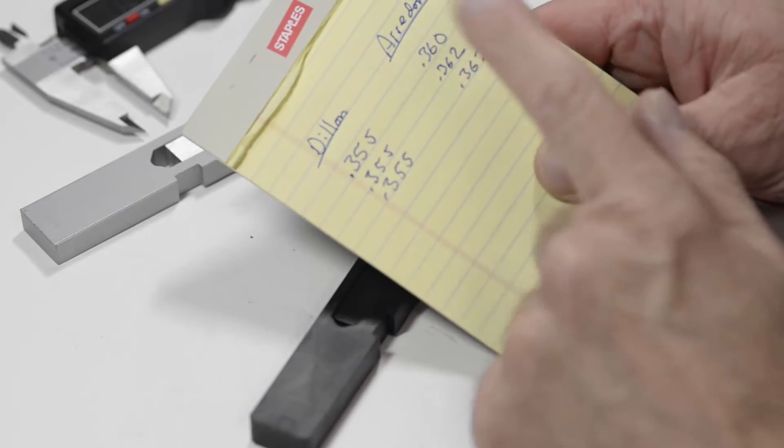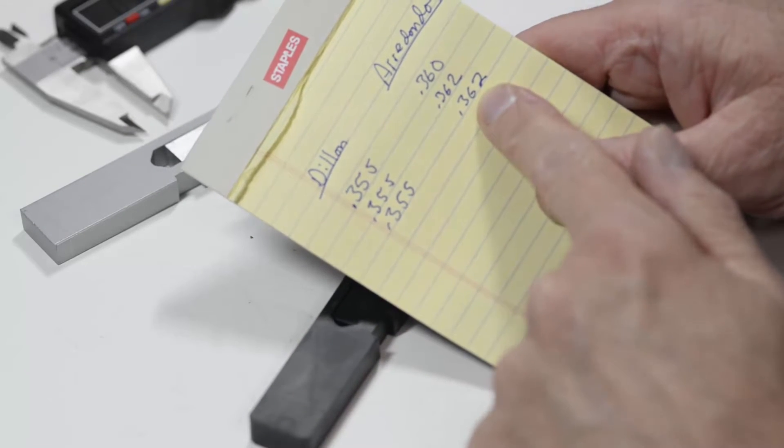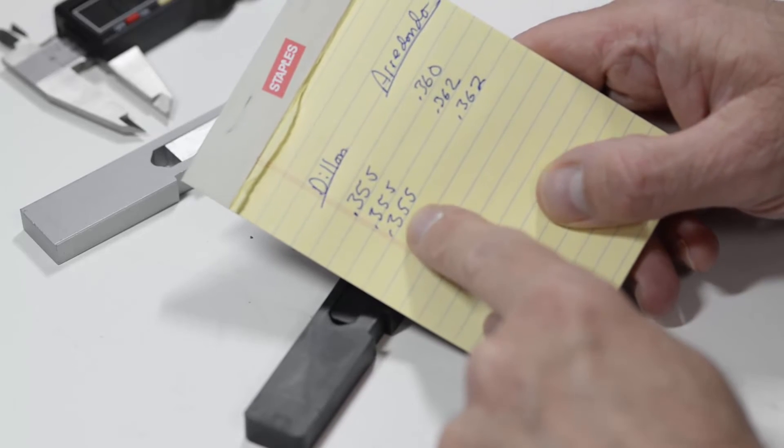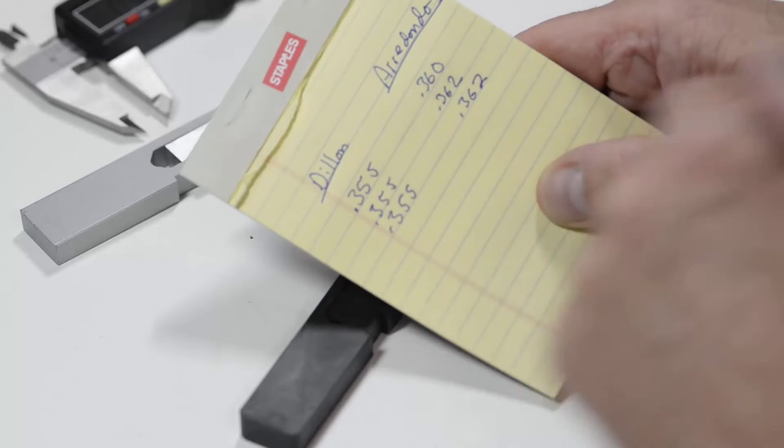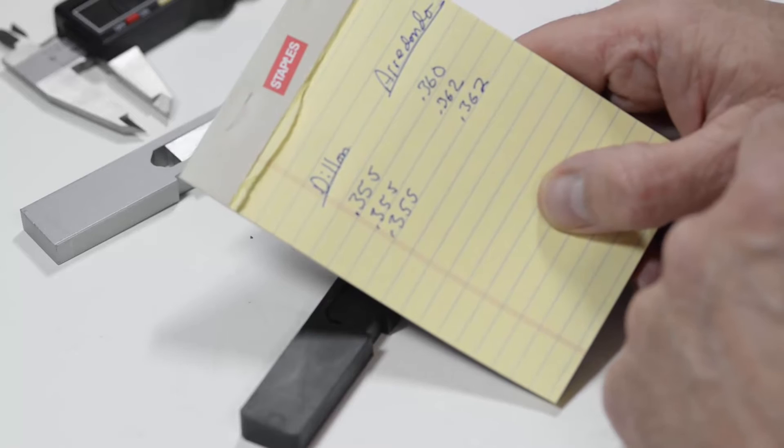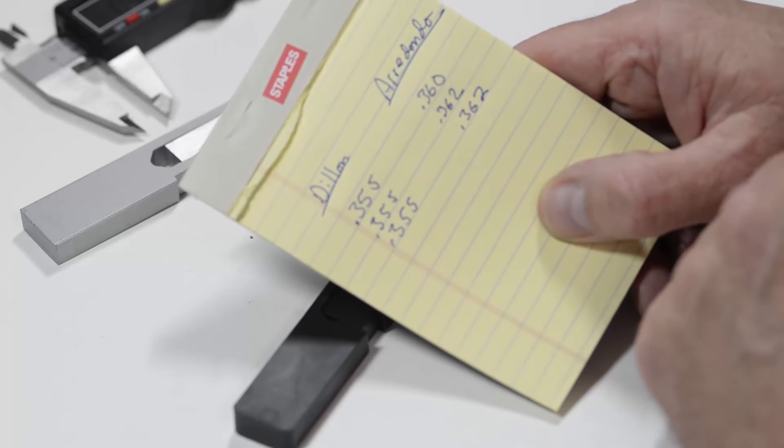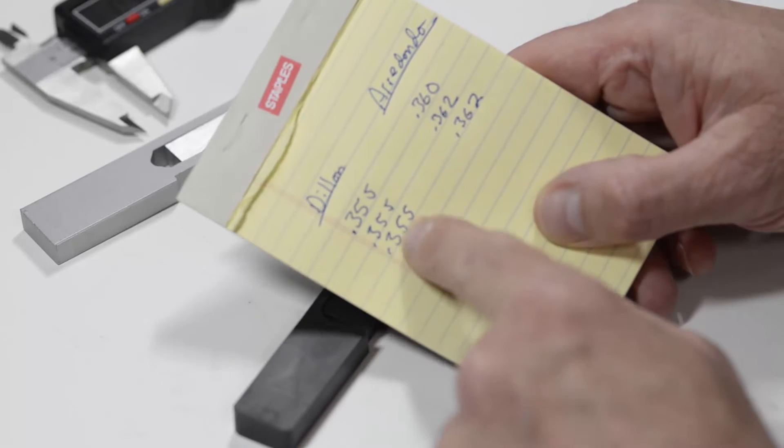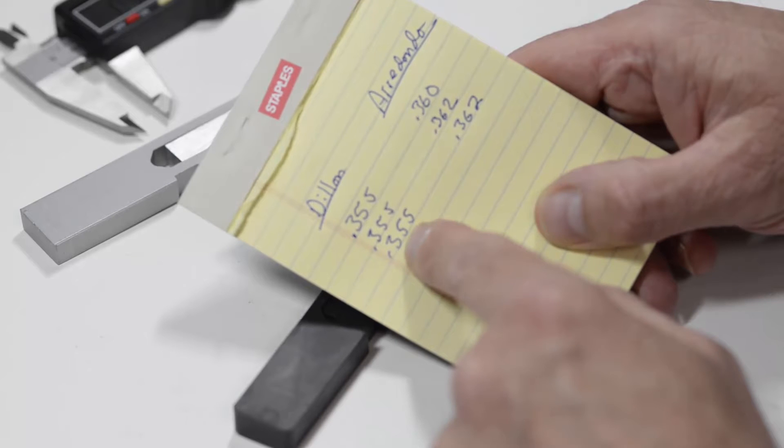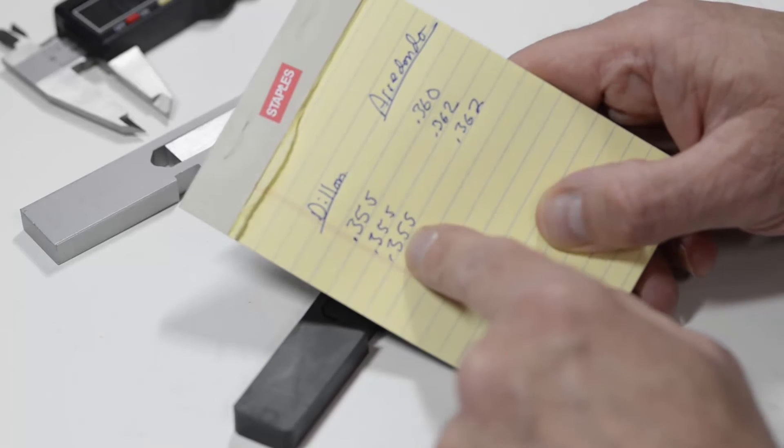This gives us our starting point and a do not go past these numbers point. We, of course, do not want to make the Arredondo powder bar be thinner than the Dillon. And if we were installing the Arredondo powder bar to stop a powder leakage, we would not sand it to the same thickness as the Dillon. We would make it slightly thicker.